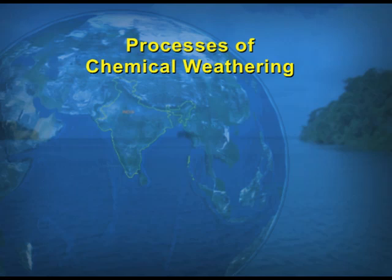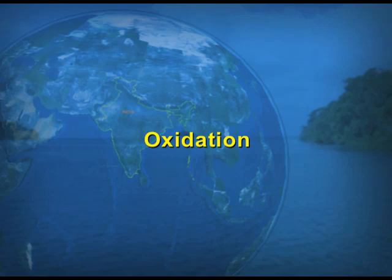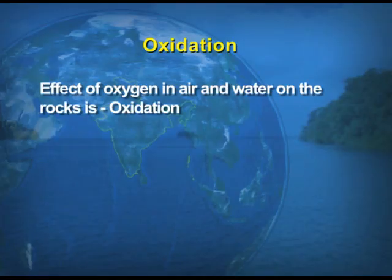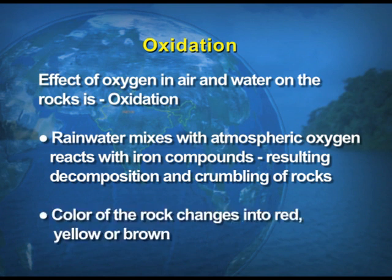There are four processes of chemical weathering: oxidation, carbonation, hydration, and solution. First, what is oxidation? The effects of oxygen in the air and water on the rock is known as oxidation. When oxygen reacts with water, oxidation takes place. Rain water mixed with atmospheric oxygen reacts on iron compounds, resulting in the decomposition and crumbling of the rocks, causing fracturing. With oxidation, the color of the rock also changes to red or brown.